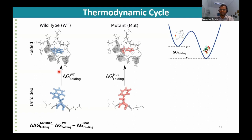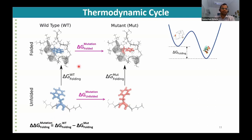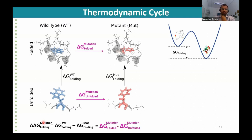Using the alchemical approach, we instead mutate the residue in the unfolded state and calculate delta G of mutation in the unfolded state, then do the same in the folded state, and take the difference. This equals delta delta G folding mutation, and can be done efficiently using GROMACS and PMX.